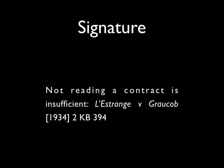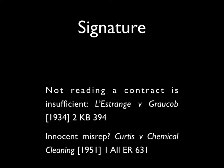However, there are some situations in which, despite two parties having clearly entered into a contract, a signature may not be binding. For example, where the other party has made an express but incorrect representation as to what is contained in the contract, and the claiming party has relied on this. See the case of Curtis and the Chemical Cleaning Company.